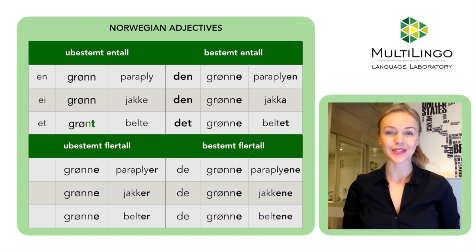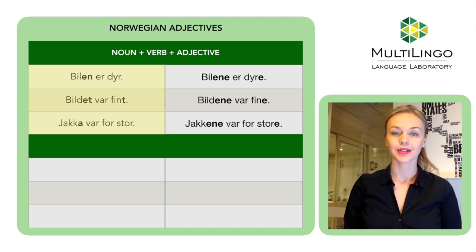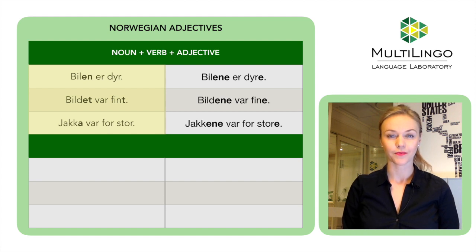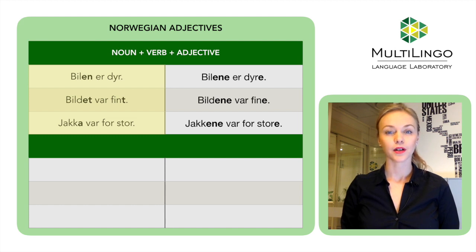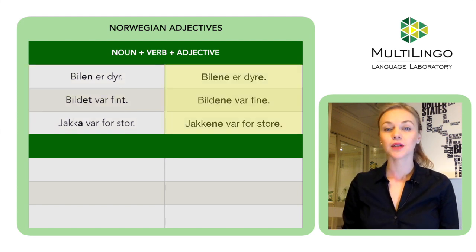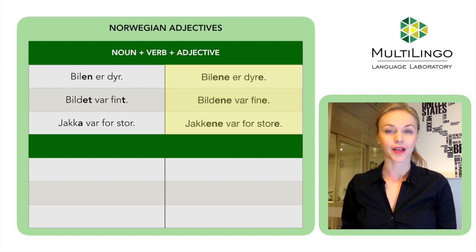I hope this is starting to feel easy for you. We're almost done. I just want to show you two more possible noun-adjective combinations. The first situation is when you have an adjective and a noun separated by a verb — like 'the car is expensive' or 'the picture was nice.' In this case, the adjective will always be indefinite even though the noun might be definite. For plural forms, the rule is still the same, but remember to use the plural form of the adjective. Bilene er dyre — the cars are expensive. Bildene var fine — the pictures were nice. Jakkene var for store — the jackets were too big.